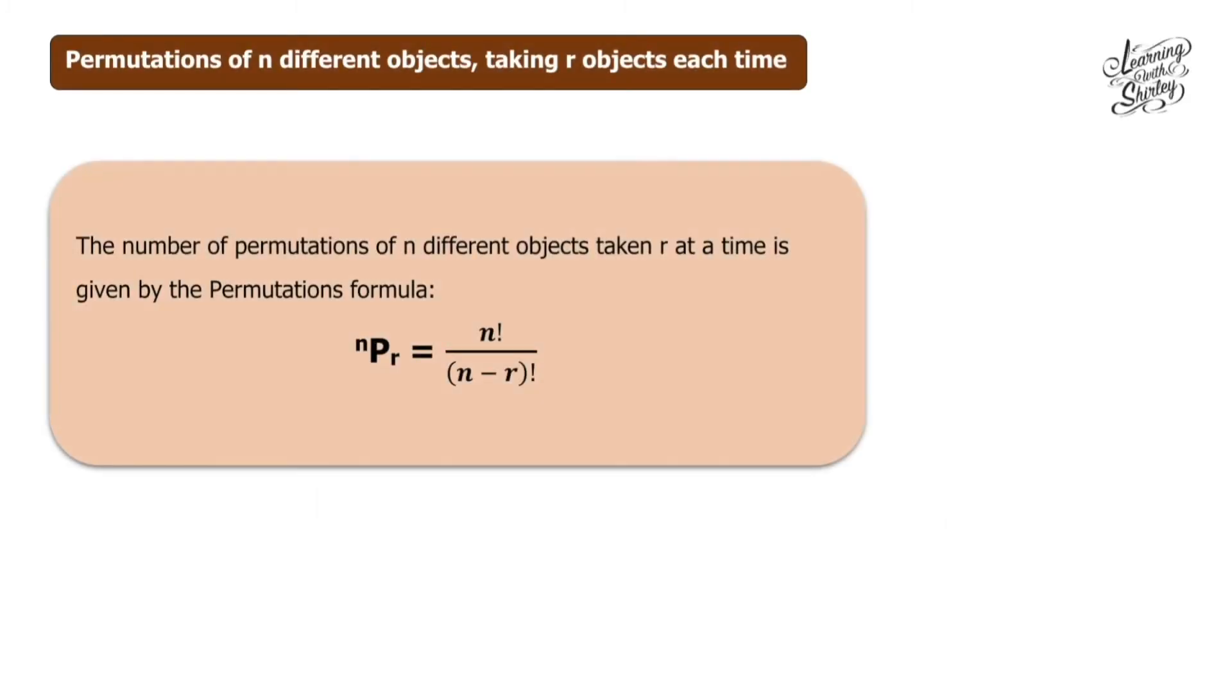In today's video, we're going to learn about permutations of n different objects taking r objects each time. The number of permutations of n different objects taken r at a time is given by the permutations formula: nPr equals n factorial over (n minus r) factorial. Remember to memorize this formula if it involves nPr.